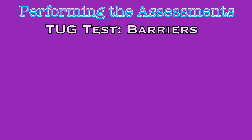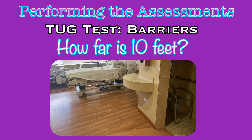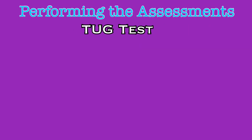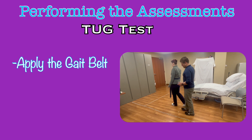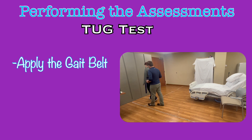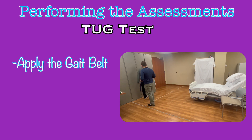The barrier is that we do not always have a consistent 10-foot measurement. An acceptable estimation of the distance is to have the patient seated at the bedside, stand up, walk to the bathroom, turn around, walk back to the bed, and sit down. Before performing the TUG test, apply the gait belt to the patient just in case you find out during the test that they do require some support while they are ambulating.